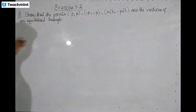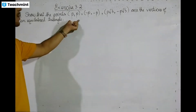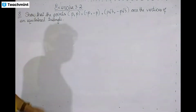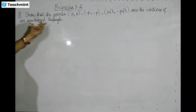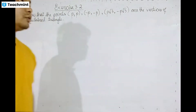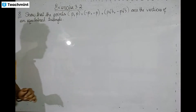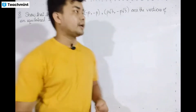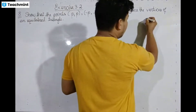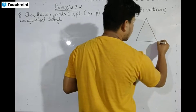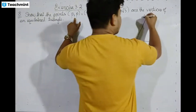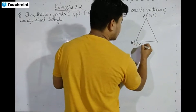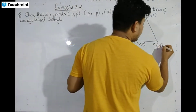So there are the points: P, P and minus P, minus P, and P root 3, minus P root 3 are the vertices. These are the vertices — the triangle is there. A is equal to (p, p), B is equal to (-p, -p), C is equal to (p√3, -p√3).